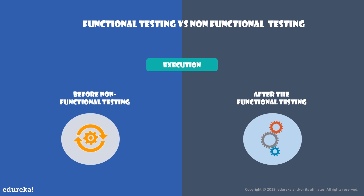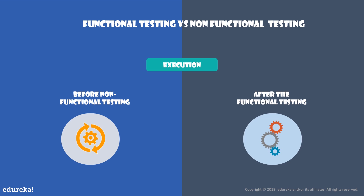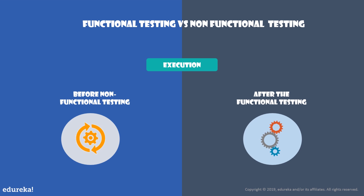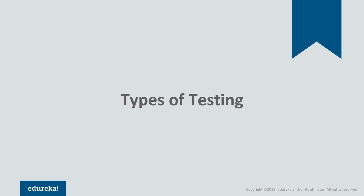In terms of execution process, functional testing is executed before non-functional testing. Functional testing helps in defining the test cases, which is why its execution happens first. Non-functional testing execution takes place only after functional testing — that is, only once the test cases are defined can you proceed further and test them.